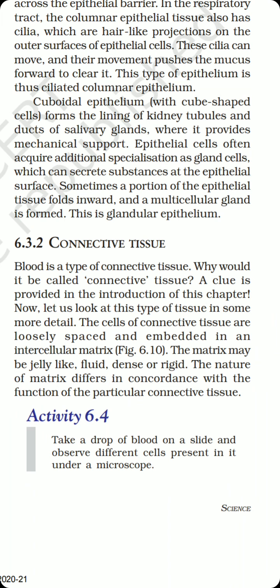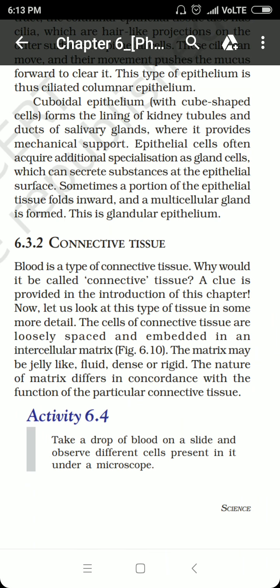The various cells that constitute blood are red blood corpuscles, white blood corpuscles, and platelets. Red blood corpuscles are also known as erythrocytes, white blood corpuscles are also known as leukocytes, and platelets are also known as thrombocytes. All kinds of blood cells perform specific functions in the body.